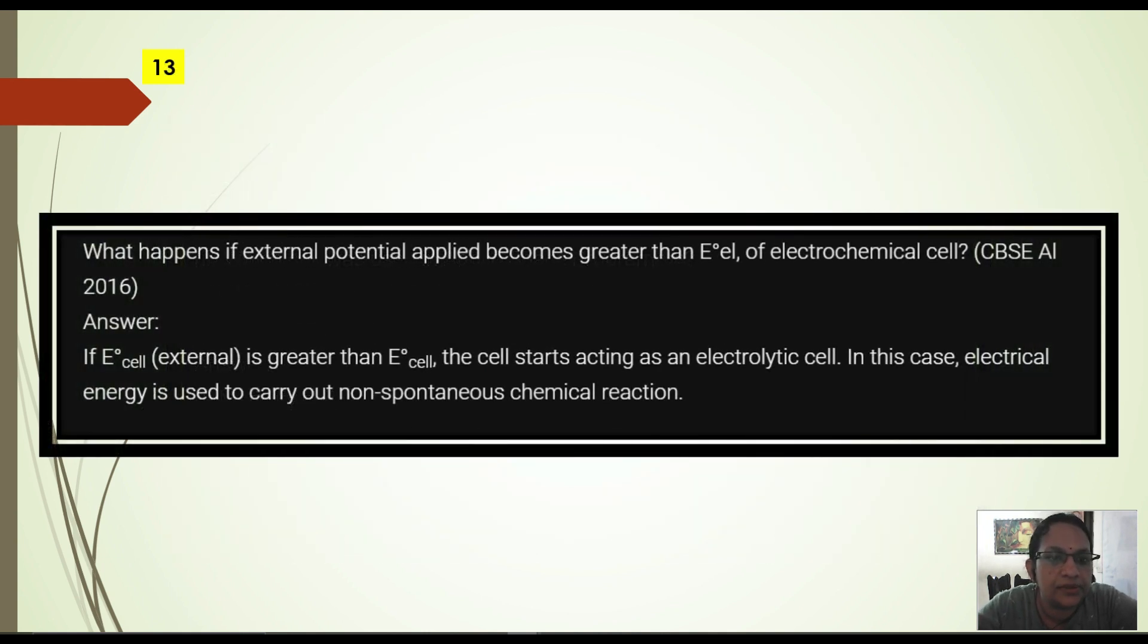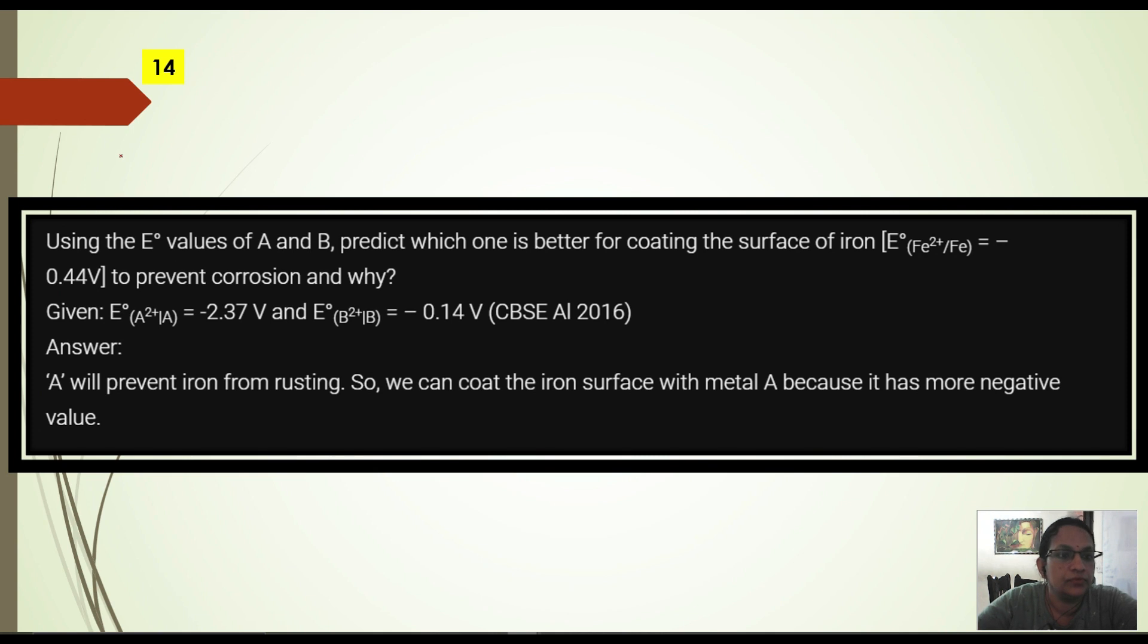What happens if the external potential applied becomes greater than emf of an electrochemical cell? If external E value becomes greater, the cell starts acting as an electrolytic cell. This is an important question. In this case electrical energy is used to carry out non-spontaneous chemical reaction.